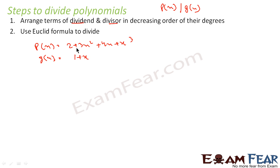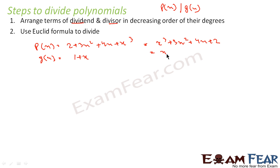The power is not arranged properly, so I'll rearrange: the highest power is x³, second highest is 3x², third is 4x, plus 2. And g(x) = x + 1. Now the first step is done — we have arranged in descending order of degree.